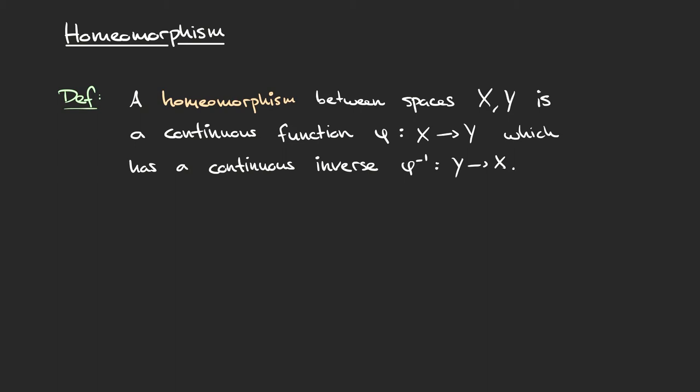To go from a continuous function to a homeomorphism, we need two additional constraints. The first one is that the function has to have an inverse, and second, that inverse also needs to be continuous. Schematically, if we have our space X and our space Y, then we can go in a continuous manner from X to Y using the function phi, and also we can go in a continuous manner back again using the function phi inverse.